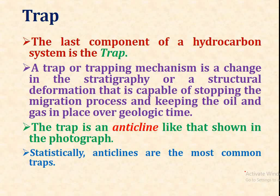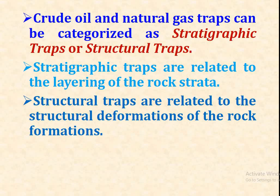The fifth and final component of the hydrocarbon system is the trap. A trap or trapping mechanism is a change in stratigraphic or structural deformation that is capable of stopping the migration process and keeping the oil and gas in place over geological time. The trap is commonly an anticline, as shown in the photograph. Oil and natural gas traps can be categorized as two types: stratigraphic traps, which are related to the layering of rock structure, and structural traps, which are related to the structural deformation of rock formations.